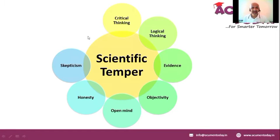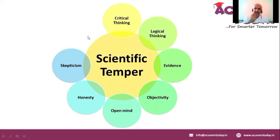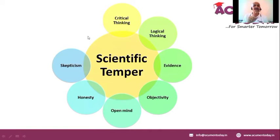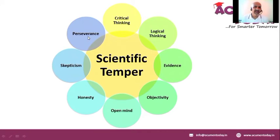For you to have the right scientific temper, suspicion is not negativism. You need to have some skepticism — is it really true? Is it really happening that way? Prove it to me, convince me. That is skepticism. I'm not saying it is negativism. Negativism will ruin your scientific temper; be always positive.